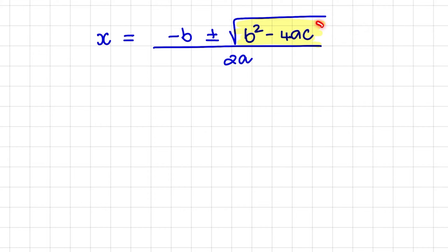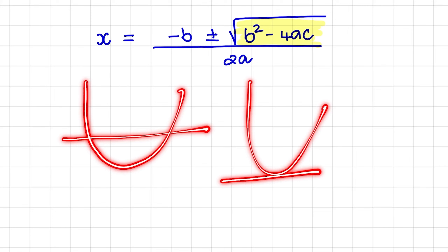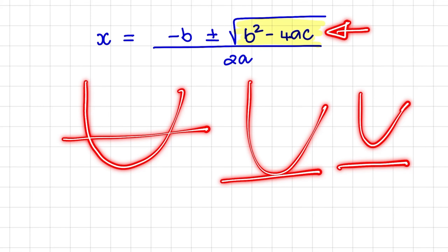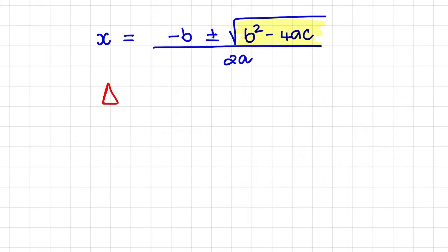We'll focus on b squared minus 4ac. This is known as the discriminant, and we can discuss whether the roots are two roots, one root, or no roots at all by looking at the discriminant — meaning b squared minus 4ac. We'll use the notation delta for b squared minus 4ac, where delta represents the discriminant.